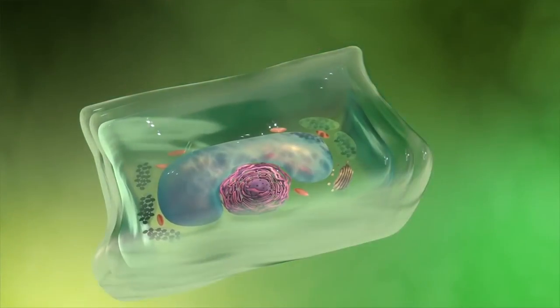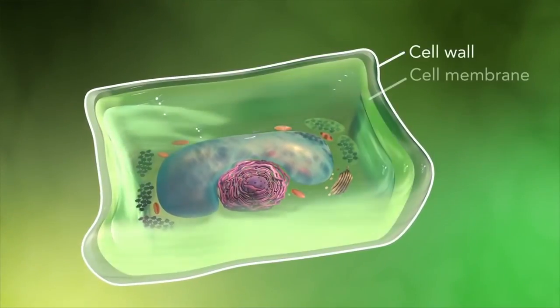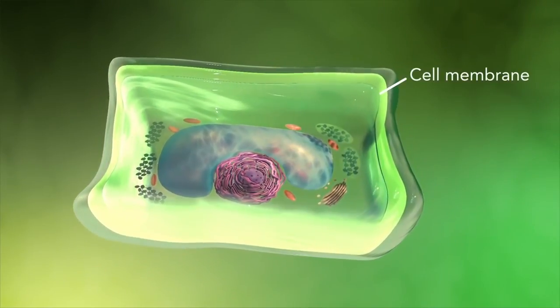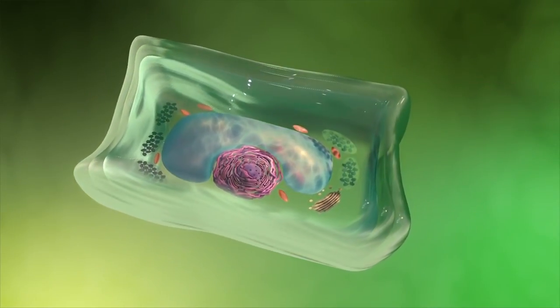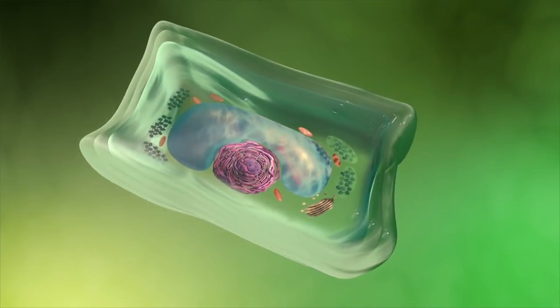Plant cells also have a cell wall outside of their cell membranes that shape, support, and protect the plant cell. Animal cells never have a cell wall.